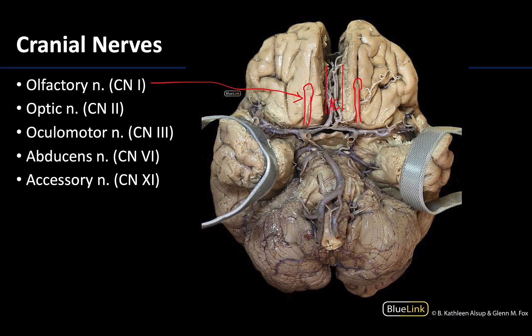Next we can see a bit of the optic nerve, or cranial nerve 2, as well as a good view of the optic chiasm right here towards the midline, nestled within or medial to much of the circle of Willis. This chiasm is the means by which fibers from the retina decussate or cross to the other side, which is very important in terms of binocular vision.